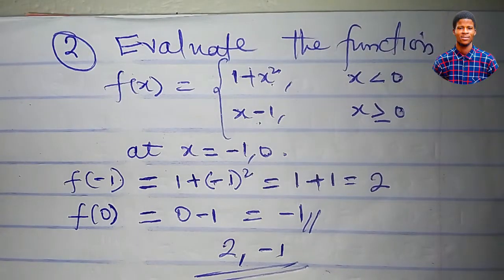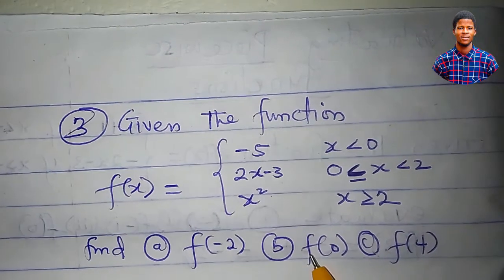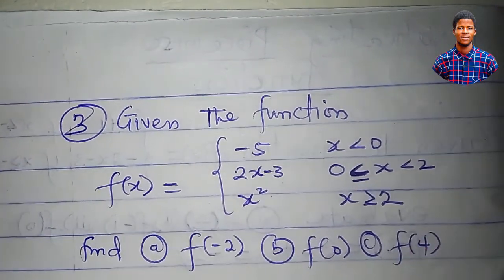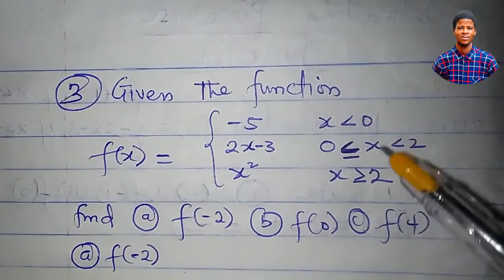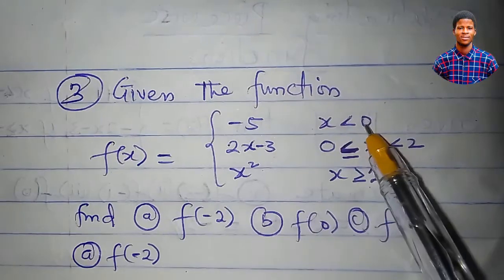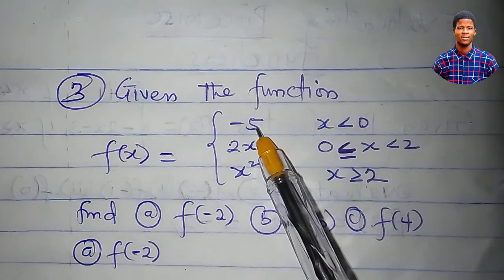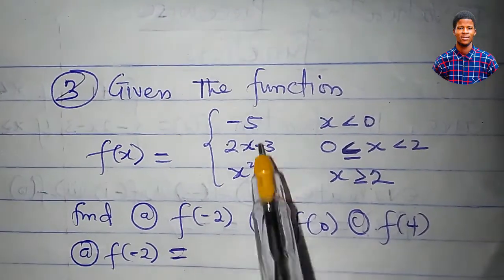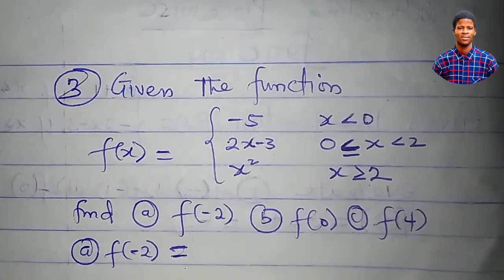I am given another piecewise function and asked to evaluate f(minus 2), f(0), and f(4). Let's find f(minus 2). In which of these intervals does minus 2 lie? It is in the interval x less than 0, since numbers less than 0 include minus 2, minus 1, minus 3, and so on. The sub-function for this interval is a constant, minus 5. So f(minus 2) is equal to minus 5.